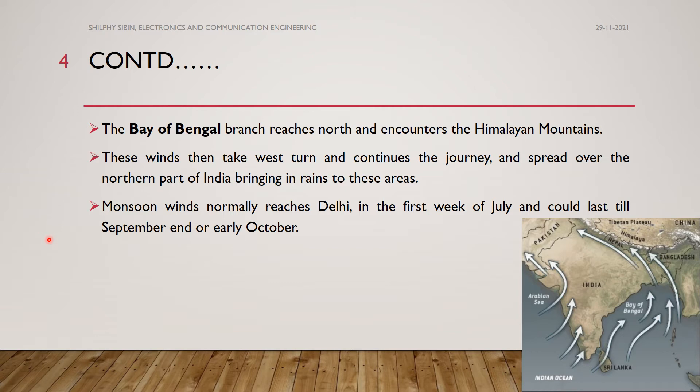The wind moves in a westward direction. In the northern part of India, there will be rain, and that continues until the end of September and early October.